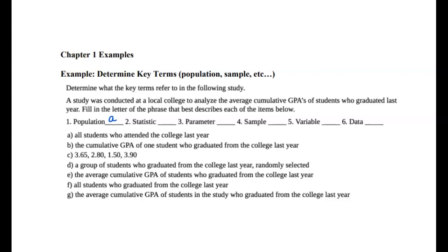Part B: the cumulative GPA of one student who graduated from the college last year. This is the variable. The variable varies from one subject in your study to another. You're looking at students — those are your subjects — and GPA is a characteristic of the subject. The GPA will vary from one student to another, so when you say the GPA of one student, that's your variable: the characteristic you're interested in.